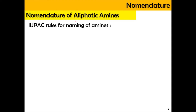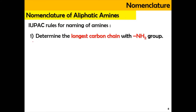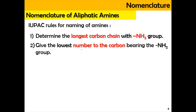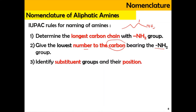Now we're going to do the nomenclature for aliphatic amines, where the IUPAC rules for naming of amines follow these steps. First, determine the longest carbon chain with the amino group. Second, give the lowest number to the carbon attached with the NH2 group — the carbon first attached with the amino group takes number one. Third, identify any substituents and determine their position. Lastly, name the compound.